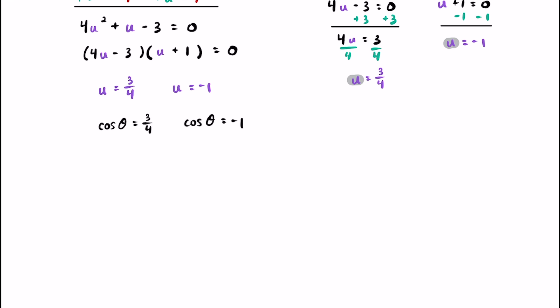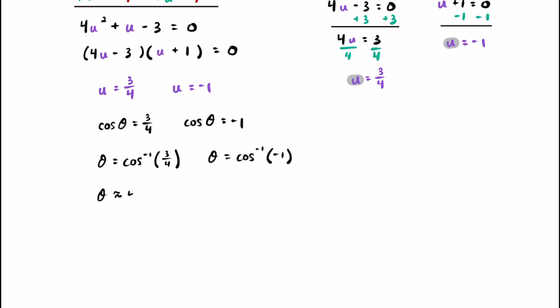Using our arc trig functions, we can say that theta equals arc cosine of three fourths, and also that theta equals arc cosine of negative one. Calculators are going to be super helpful here. Plugging this in, theta is approximately 41.4 degrees. And when you plug in arc cosine of negative one — you don't need a calculator for this one — theta is equal to 180 degrees.